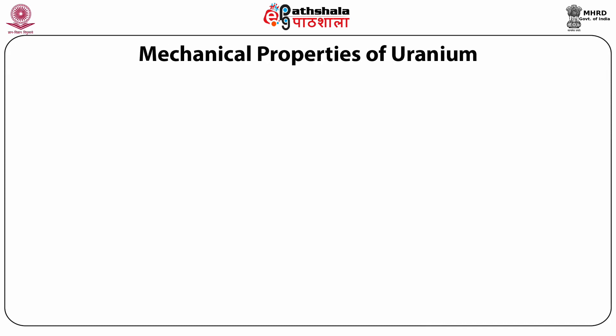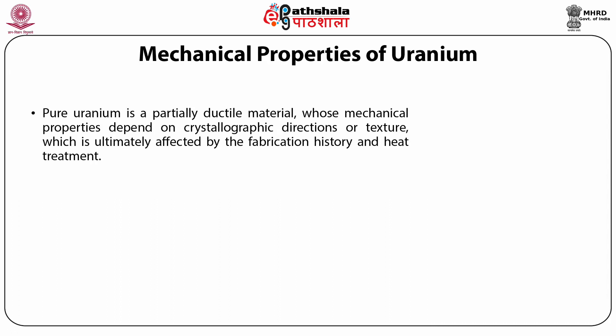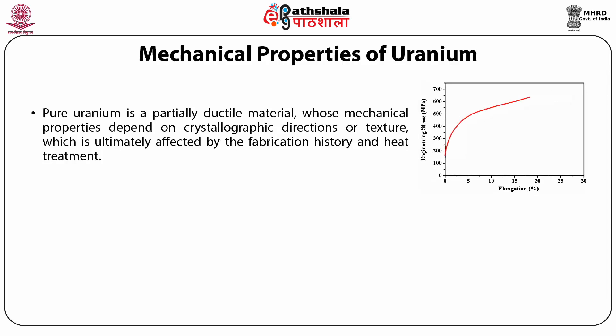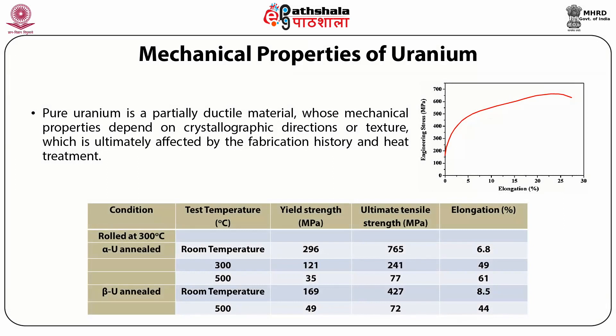Next, we discuss the mechanical properties of uranium. Pure uranium is a partially ductile material whose mechanical properties depend on crystallographic directions or texture, ultimately affected by fabrication history and heat treatment. Grain size and shape also affect its mechanical properties significantly. The tensile strength and modulus are sensitive to impurity atoms such as carbon, fission products and alloying elements. A typical stress-strain curve of uranium shows that tensile strength decreases precipitously with temperature.